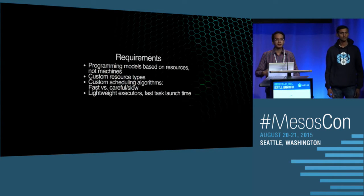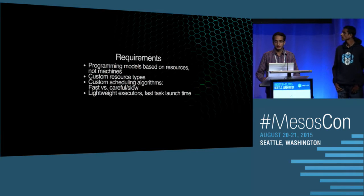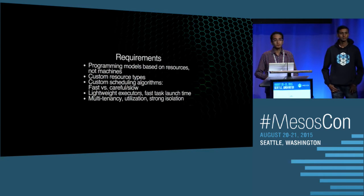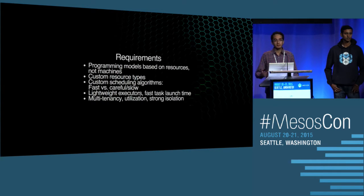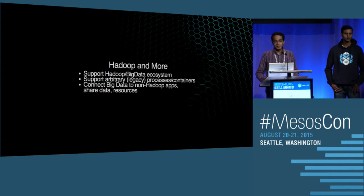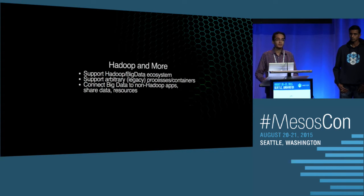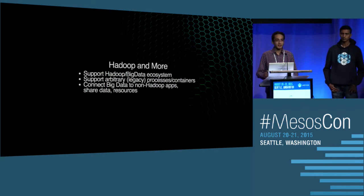You also want lightweight executors that can launch your tasks really quickly without adding extra overhead. And you want to run all of these workloads on any node in your data center — you don't want to create silos, so you want to support multi-tenancy. To support multi-tenancy, you need strong isolation, which can drive up your utilization. You also want to support the entire big data ecosystem and Hadoop together, not leave behind legacy systems, support containers, and connect big data to your non-Hadoop apps, because they can no longer live in silos.